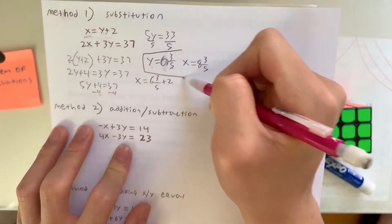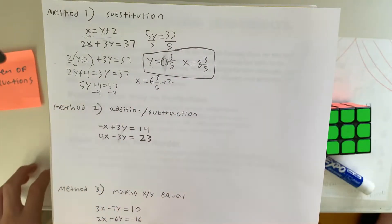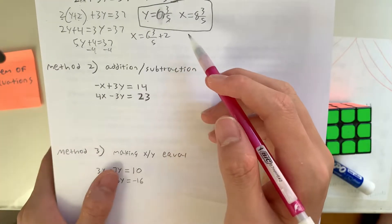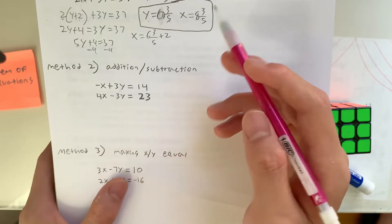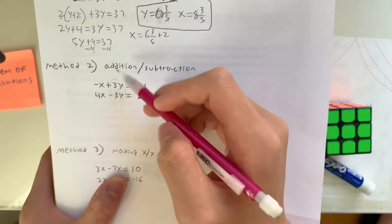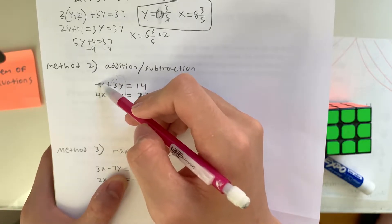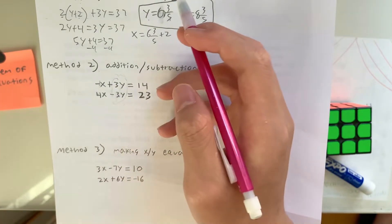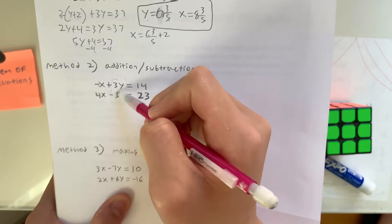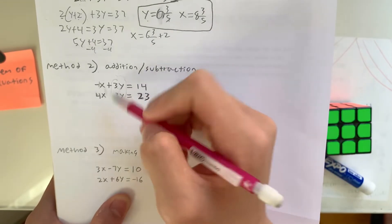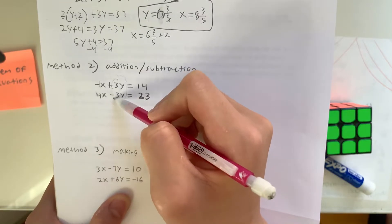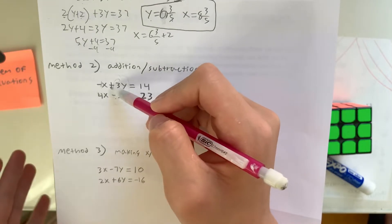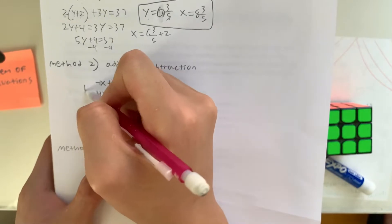So the second method is addition slash subtraction. Let's look at our equations. In this case, you're trying to look for the same constant. So you see 3 and 3. In front of this, it's negative 1 and 4, so these two are not the same. But in this case, you see a 3 and a 3, so that's perfect. So what you're going to do is see whether you're going to subtract or add. You see plus and minus. If you add, plus and minus will cancel each other out, whereas if you subtract, they'll equal a positive or negative number. So let's add these two equations.